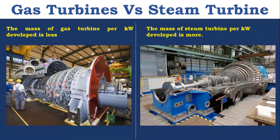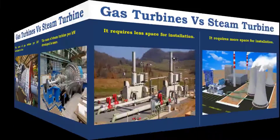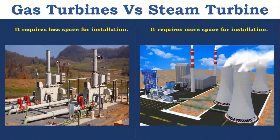Steam Turbines are made of heavy metals. Also, Steam Turbine has many accessories compared to Gas Turbine, which makes Steam Turbine heavier than Gas Turbine. Gas Turbine requires less space for installation, whereas Steam Turbine requires more space for installation.